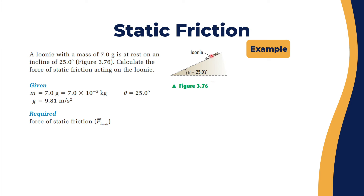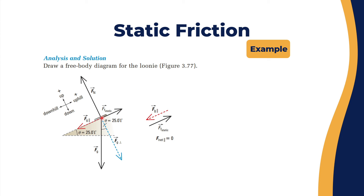Now let's take an example. We have a looney on an inclined surface; the surface is inclined at 25 degrees, his mass is 7 grams, and he's at rest. The inclination is 25 degrees — find the force of static friction acting on the looney. The mass is 7 grams, which is 0.007 kilograms, theta is 25°, g is 9.81 m/s². Let's do a free body diagram. We set our convention: uphill is positive, upwards is positive, forces parallel to the surface and perpendicular to the surface.